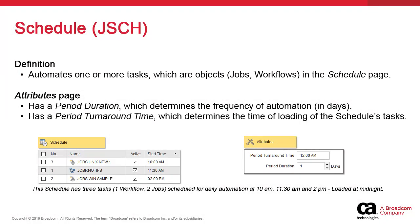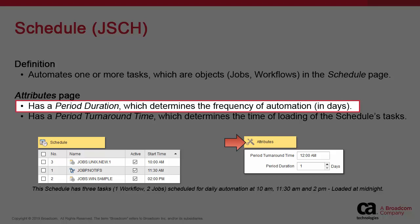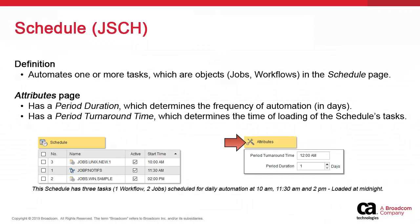It's important to segregate schedule properties and task properties. The schedule object itself has important properties in the attributes page. The period duration sets the automation cycle in days. In essence, the period drives automation by dictating the frequency of execution of the tasks.